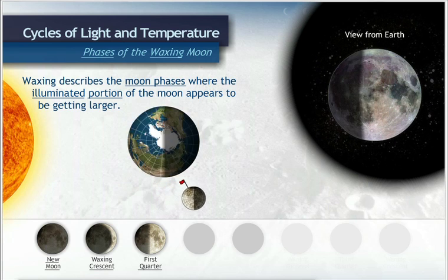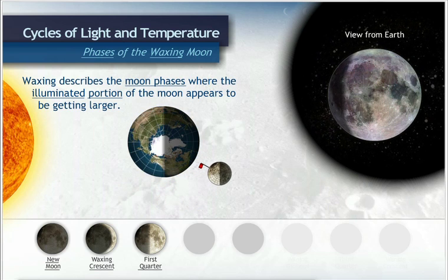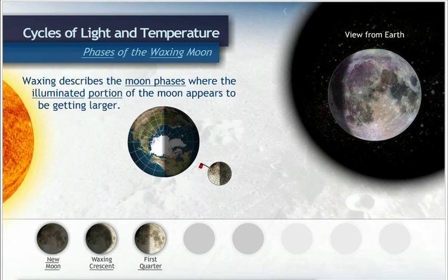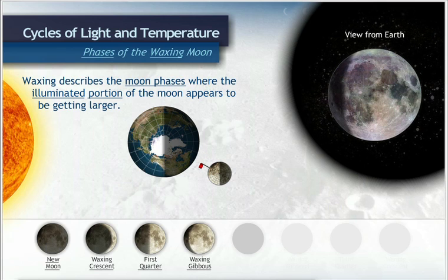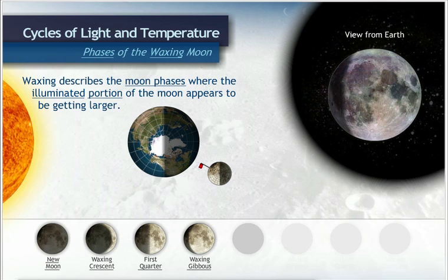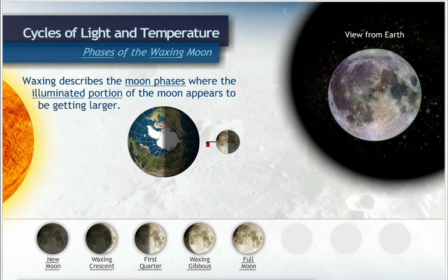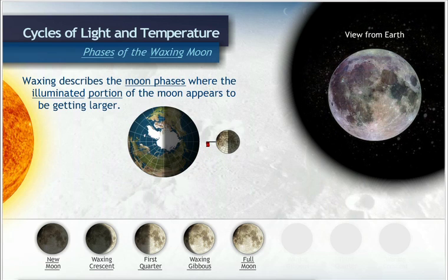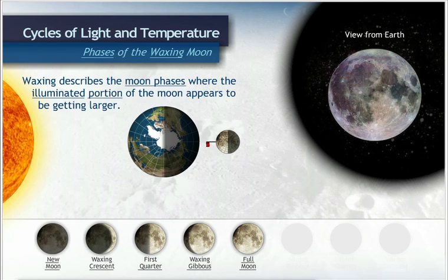As the moon continues its cycle, we begin to see more than half of the surface facing Earth. We call this a waxing gibbous moon. The full moon comes after waxing gibbous and indicates that the lunar cycle is half completed.